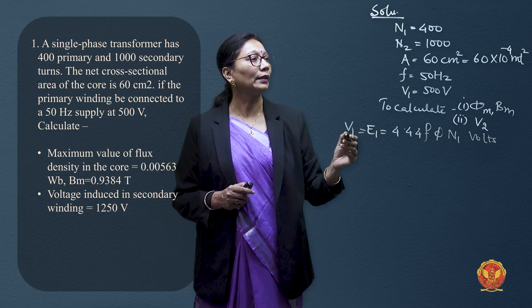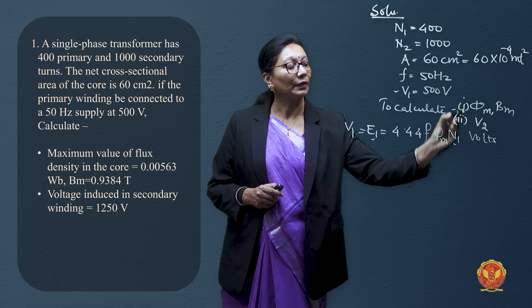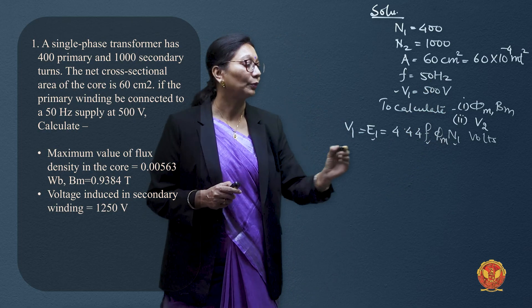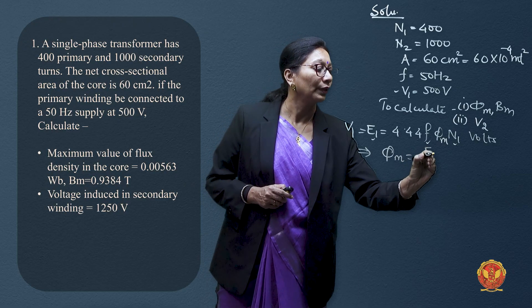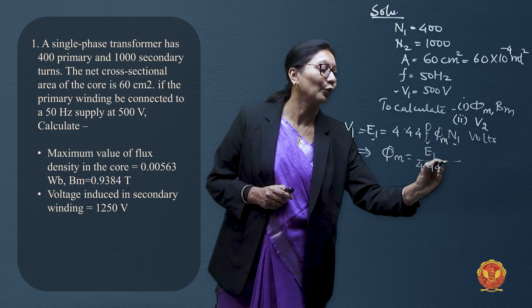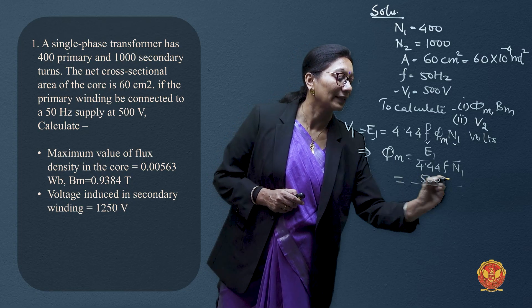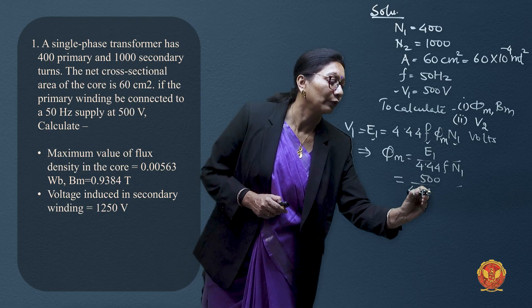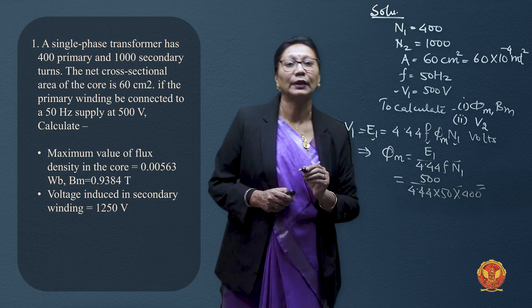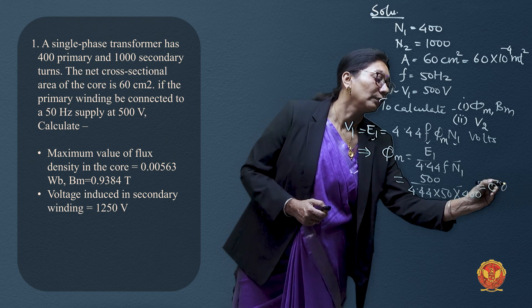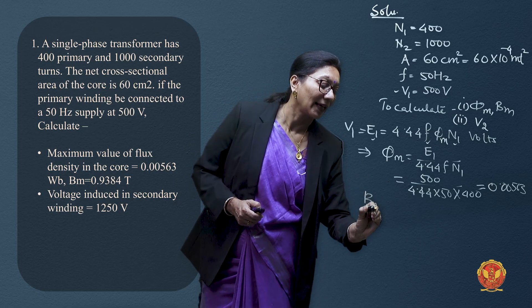Since V1, frequency, and N1 are all given, we can rearrange the expression to find φm: φm = V1 ÷ (4.44 × F × N1). Placing all the values: φm = 500 ÷ (4.44 × 50 × 400). After calculation, we get φm = 0.00563 Webers.